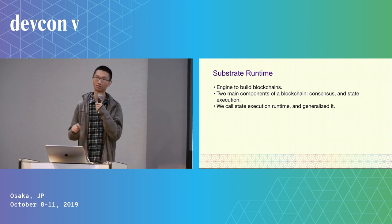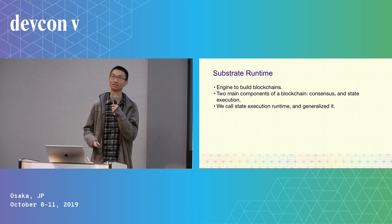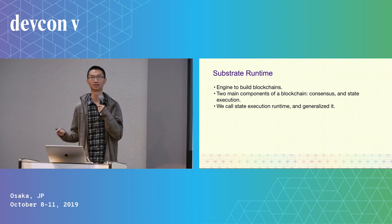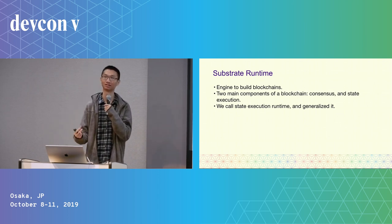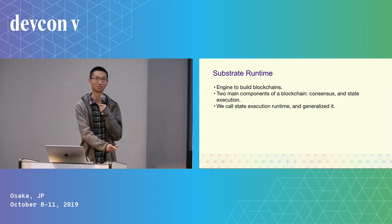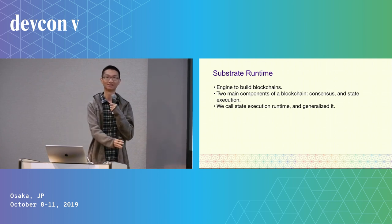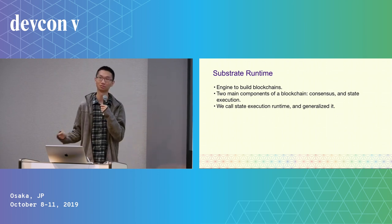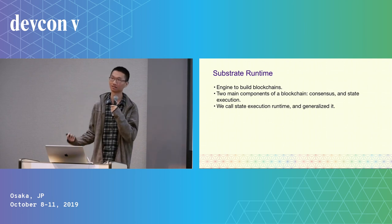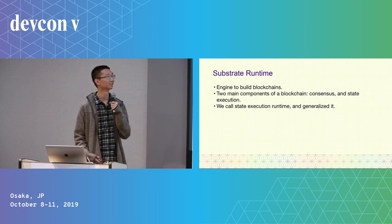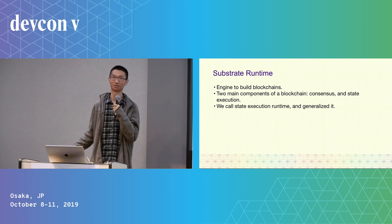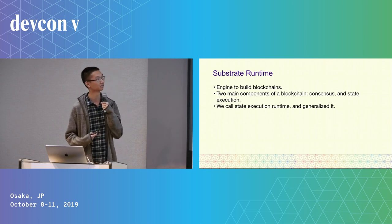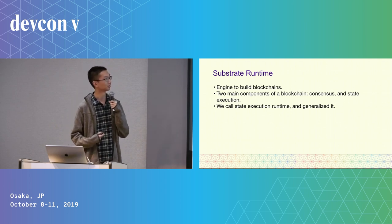It's really hard to generalize the consensus part, because different consensus mechanisms can require entirely different structures. Some consensus need finality, some don't; some need only the past block, others need to refer back to many previous blocks. Also, some consensus need a lot of auxiliary data, and some don't. There are also a vast variety of different fork-choice rules — that's really hard to generalize, but we have some helpers.